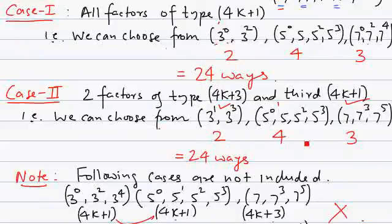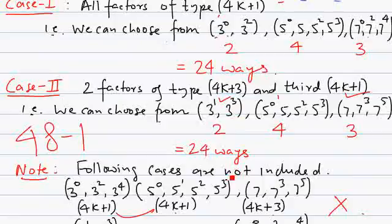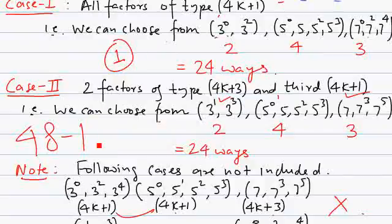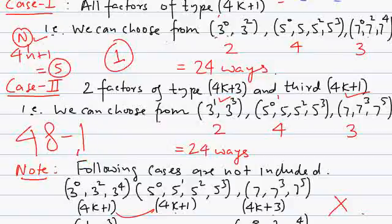The total count is 48, but we subtract 1 because one of the selections is 3^0 × 5^0 × 7^0 = 1. The question asks for divisors of the type 4k+1 where n is a natural number. Since the minimum value of n is 1, the smallest factor must be at least 5. Therefore 1 cannot be included in the list of divisors, so we subtract 1, giving a final answer of 47.